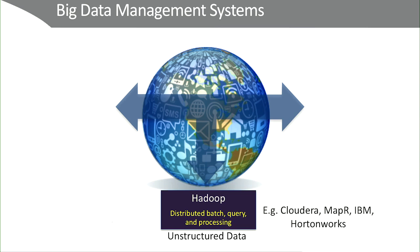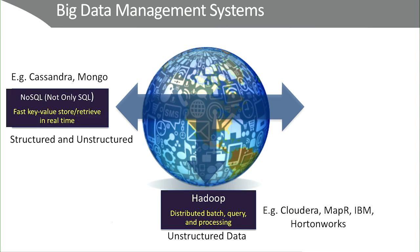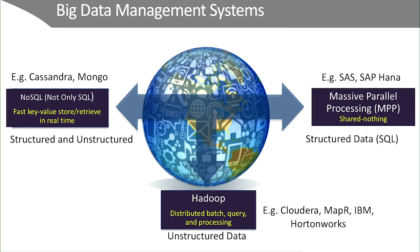There are other systems that solve different types of problems. For example, there's a type of Big Data Management System called NoSQL — that doesn't mean there's no SQL, but it means not only SQL. It's a flexible system that allows you to support both structured and unstructured data in the same system. Examples of distributions would be Cassandra and Mongo. Another example is purely structured data on Massive Parallel Processing Systems, or MPP — examples would be SAS and SAP HANA. SAP HANA uses MPP in an in-memory system, which makes it very fast because it doesn't have to go back to disk.